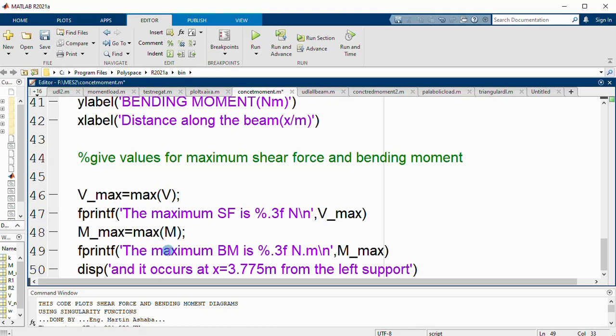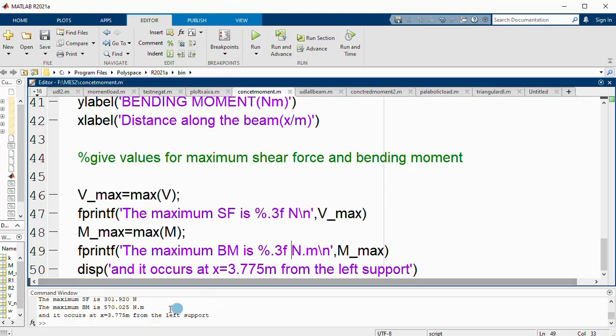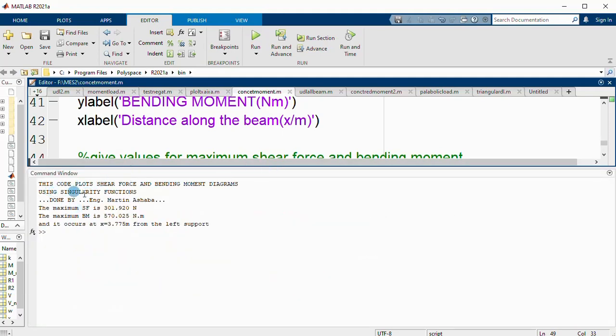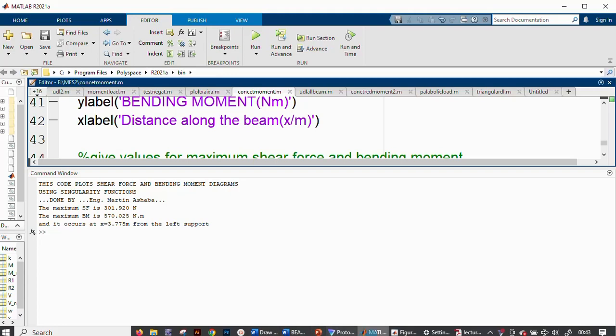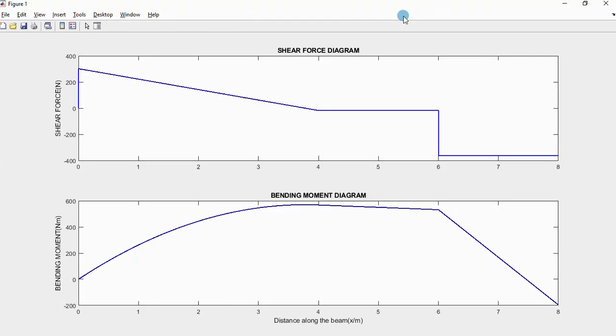When I run this, it should give me some good answers. This code plots shear force and bending moment diagrams using singularity functions, done by me. The maximum shear force is 301.9, around 302 newtons. The maximum bending moment is 570 newton meter, and it occurs at x equals 3.75 meters from the left support. Let us see the plot. This is how the plot looks like.